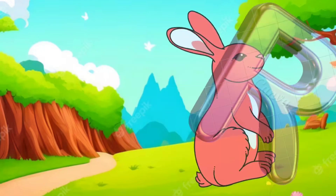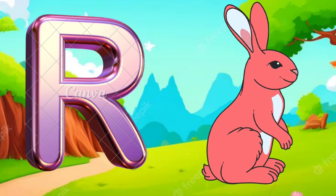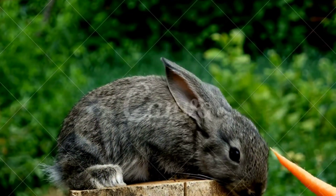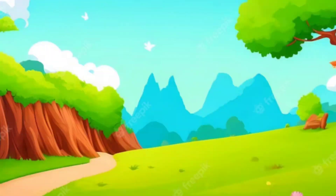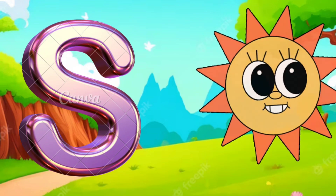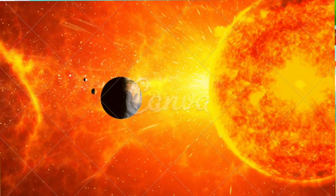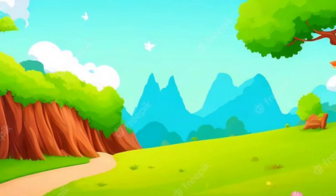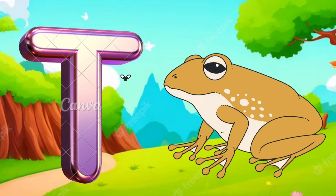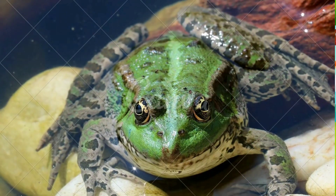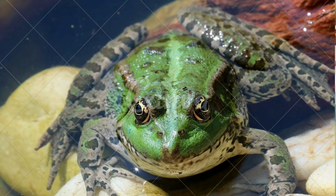Q is for Queen, Q-Q-Queen. R is for Rabbit, R-R-Rabbit. S is for Sun, S-S-Sun. T is for Toad, T-T-Toad.